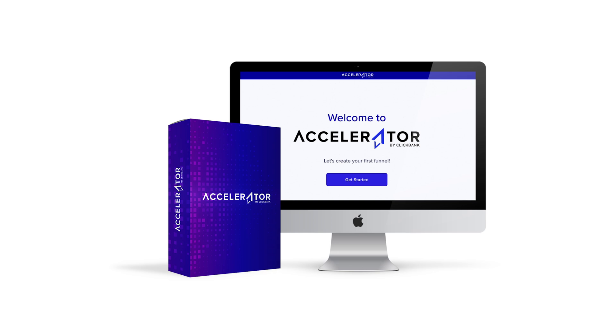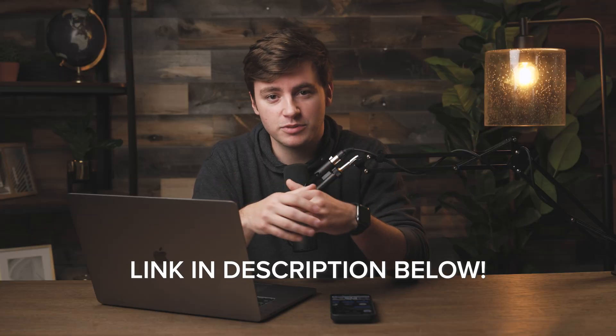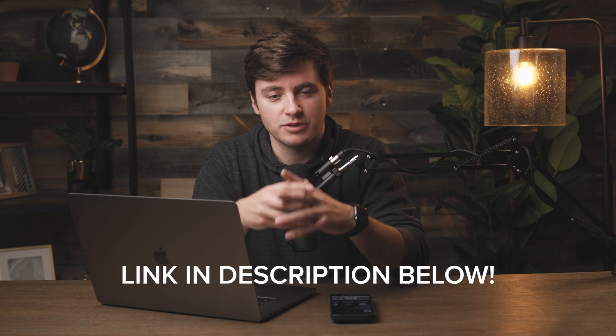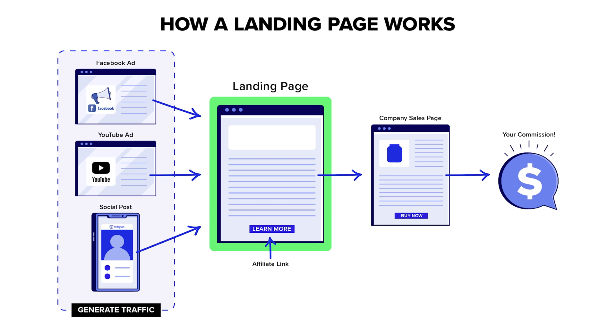ClickBank Accelerator is ClickBank's very own landing page builder, and if you're interested in learning more about it, there's a link down below in the description. Affiliate marketing is a great way to monetize your audience, no matter if you have a small following or a ton of followers on any of the social media platforms. We're going to be focusing specifically on Instagram today and diving into exactly how to create a landing page that can turn those followers into affiliate commissions.